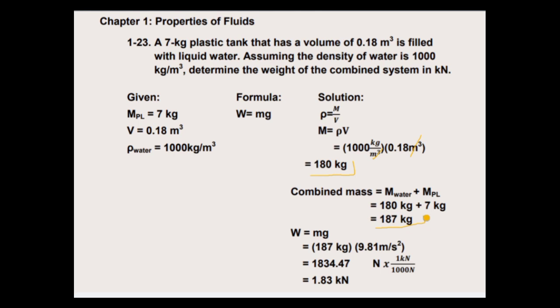So now we can proceed to solve the weight of the combined system. Weight equals mass times acceleration due to gravity. So the combined mass is 187 kilogram times 9.81 meter per second squared. Using our calculator equals 1834.47 newton.